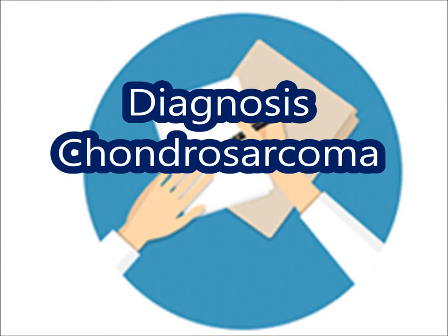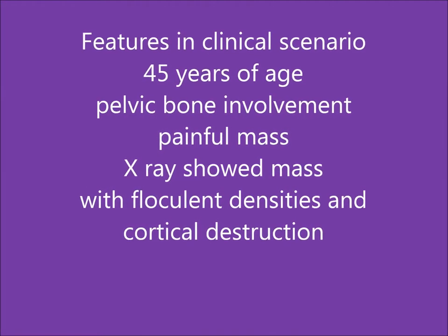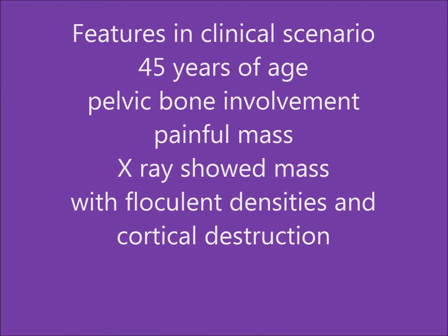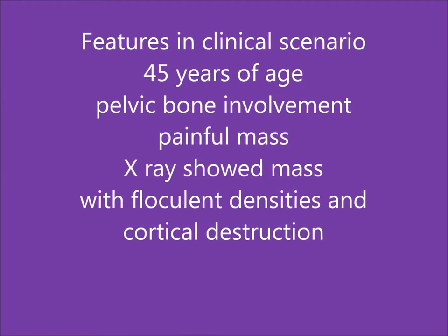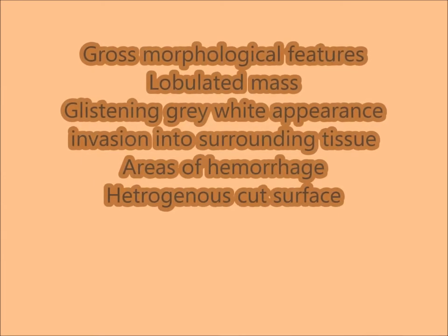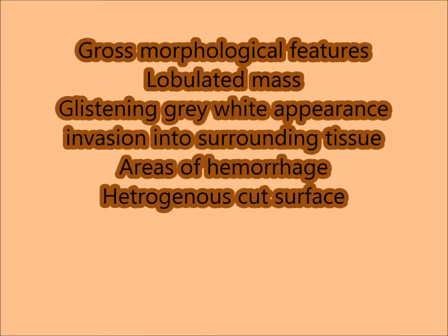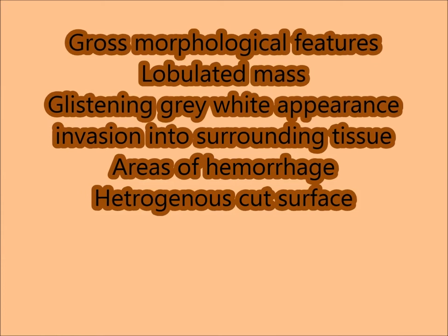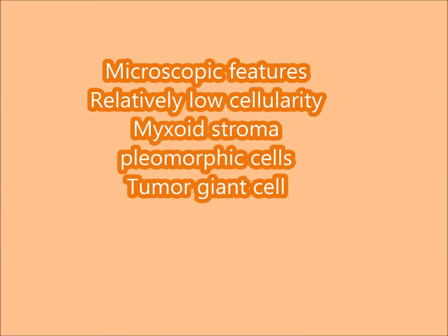Based on the clinical scenario, gross, and microscopic findings, the diagnosis is chondrosarcoma. Supporting features from the clinical scenario include: 45 years of age, pelvic bone involvement, painful mass, and on X-ray — flocculent densities and cortical destruction. Grossly, it is a bulky lobulated tumor with a glistening gray-white appearance, invasion into surrounding tissues, areas of hemorrhage, and a heterogeneous cut surface.